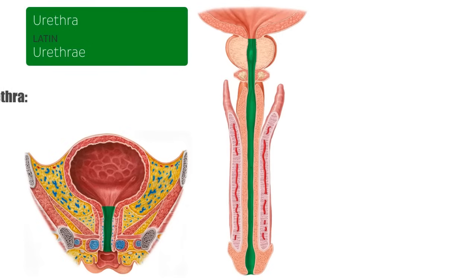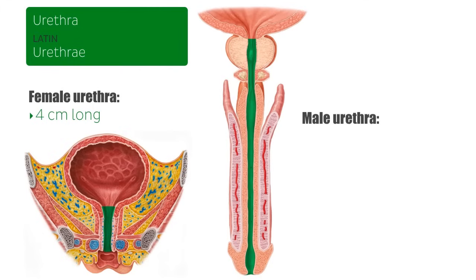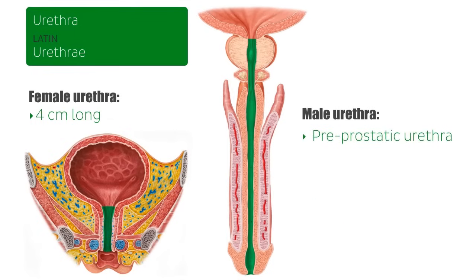The female urethra is approximately four centimeters long, with its external opening situated between the clitoris and the vagina. The male urethra is much longer and can be divided into four parts. The pre-prostatic urethra is the initial part, only about 0.5 to 1.5 centimeters long, continuous with the neck of the bladder, and surrounded by an involuntary muscle called the internal urethral sphincter.